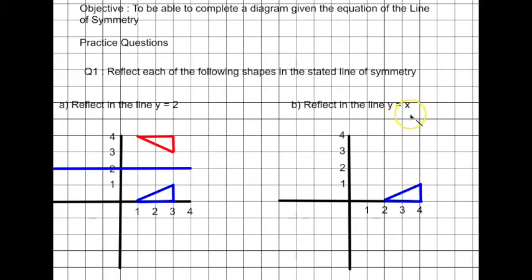Question B then, slightly more complicated this one. We've got to reflect this shape in the line y equals x. Let me put that one in for you. So the line y equals x is actually a diagonal line at 45 degrees going through the center zero.